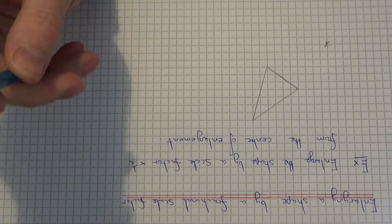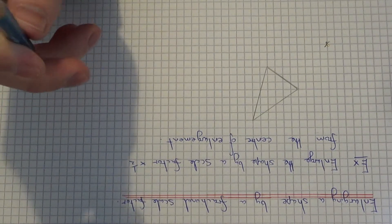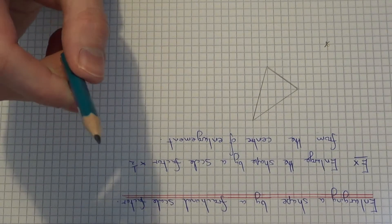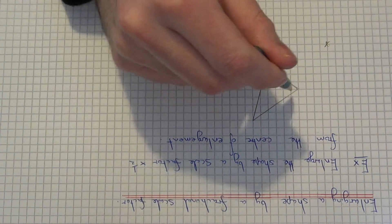So basically, if the scale factor is times a half, it's actually making the shape smaller. So we're making all the side lengths half as long as the original shape.